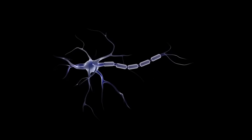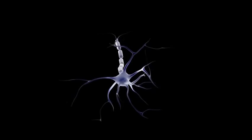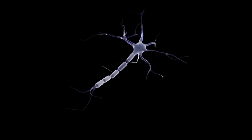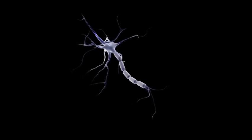From the cell body the message travels down a long fiber called the axon. The axon sends the signal away from the cell body to other neurons, muscles, or glands.